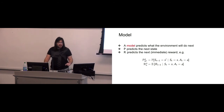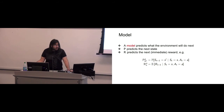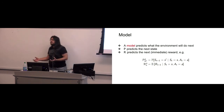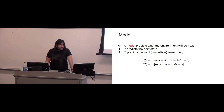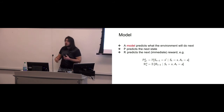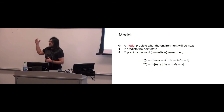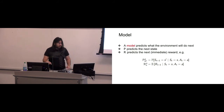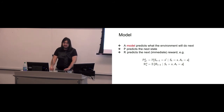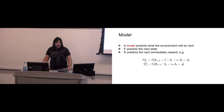The model predicts what the environment will do next. The transition probability P predicts the next state: if you are in state S and perform action A, what is the probability of getting to state S'? R predicts the next immediate reward: what reward will be obtained if I take action A in state S arriving at state S'? A model is a combination of transition probability prediction P and immediate reward prediction R.